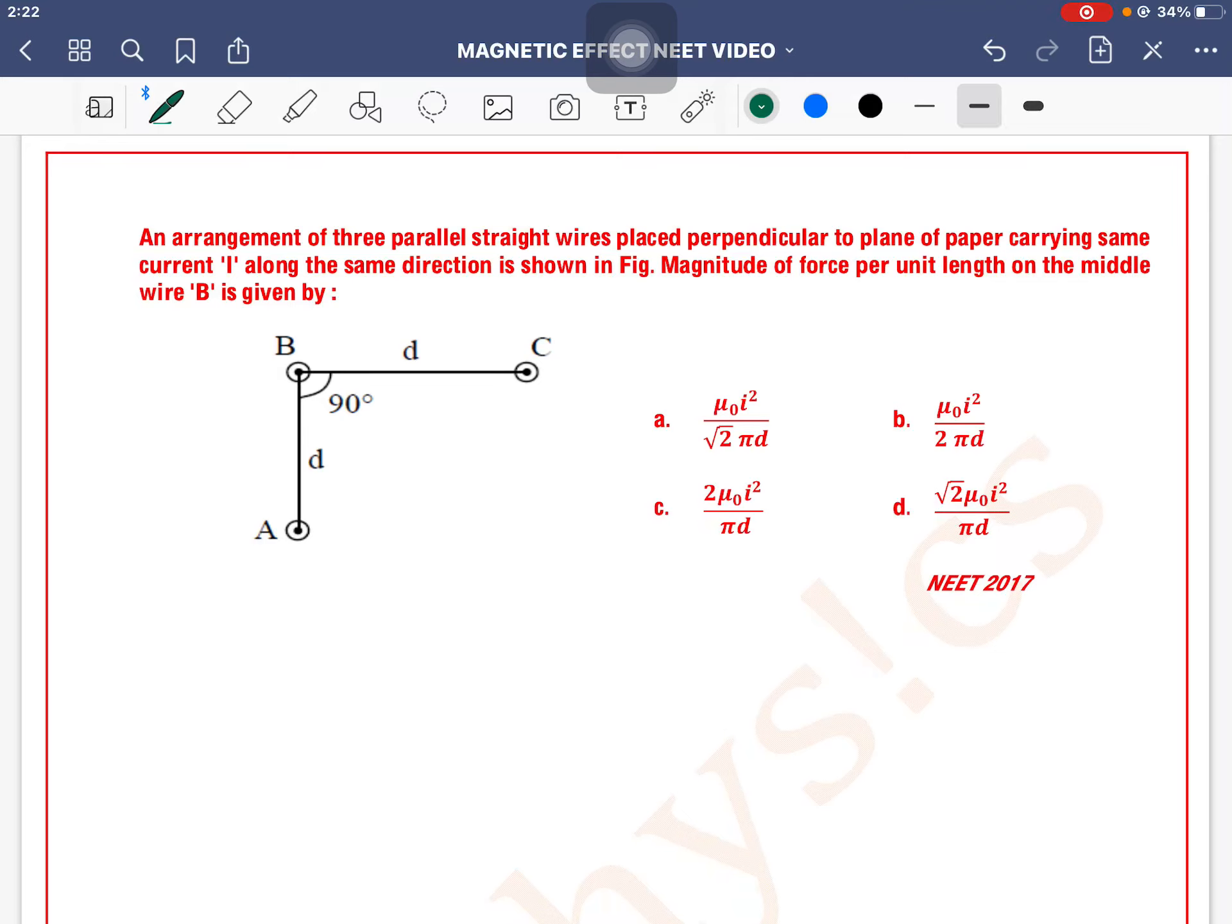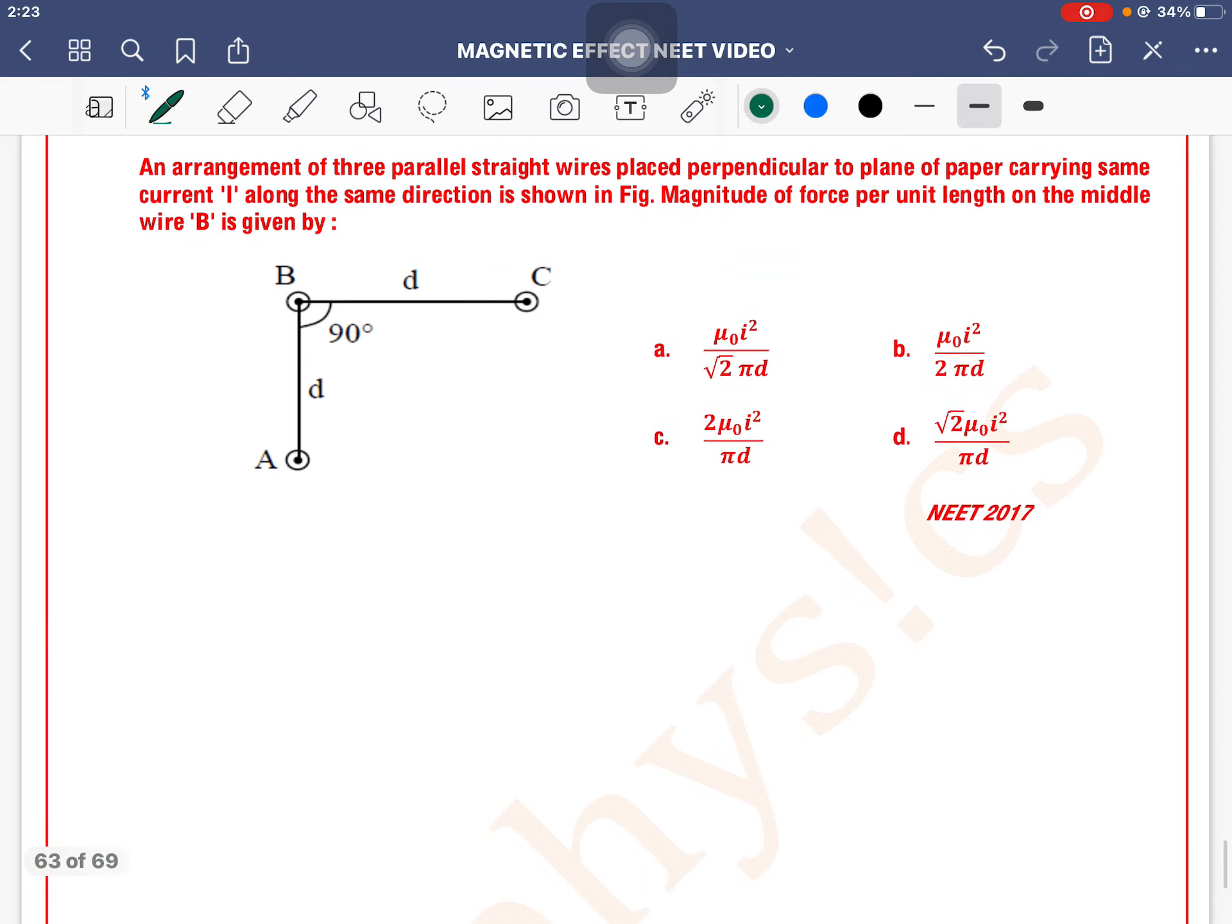An arrangement of three parallel straight wires placed perpendicular to plane of paper carrying same current I along the same direction is shown in figure. Magnitude of force per unit length on the middle wire B is given by: